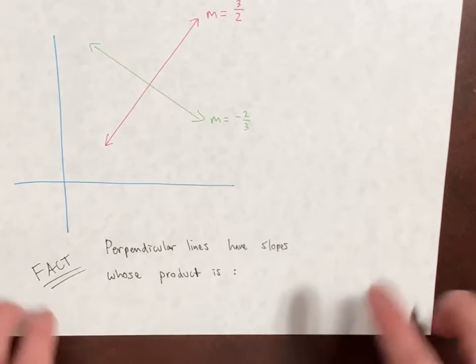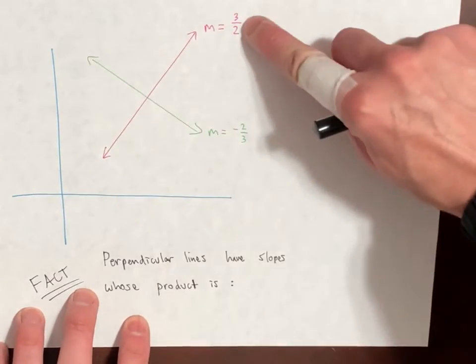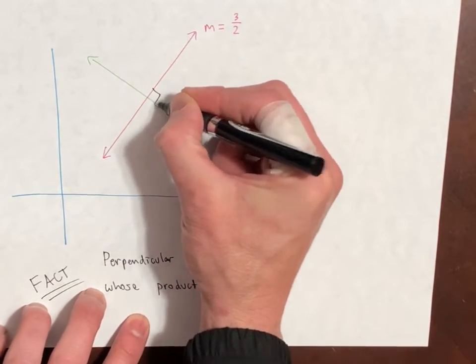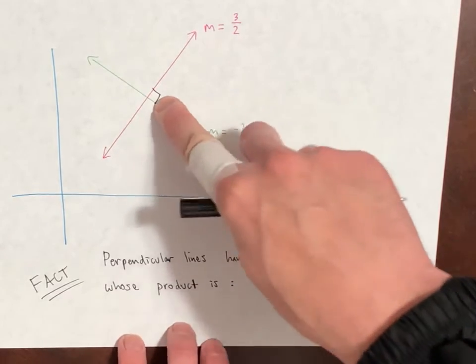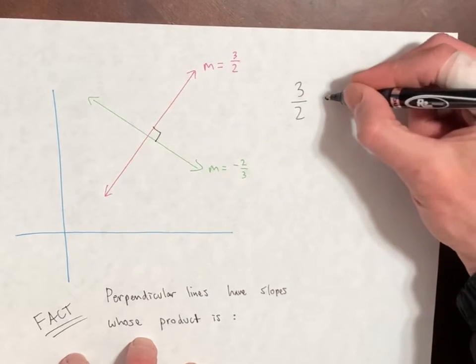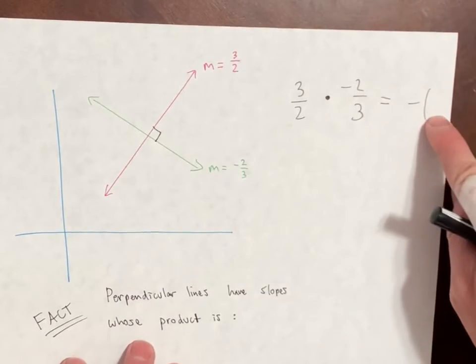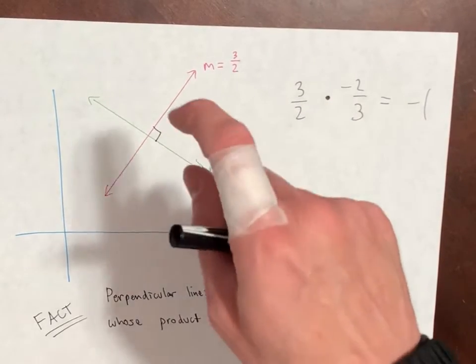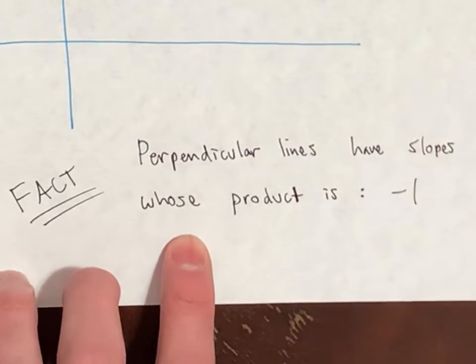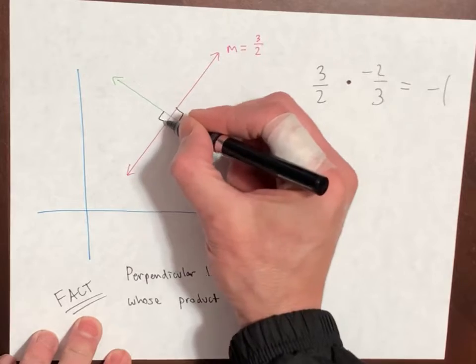Here's a quick fact from Algebra 1. Perpendicular lines have slopes whose product is... This pink one has a slope 3 over 2. This green one has a slope negative 2 thirds. I can tell you these are perpendicular because if I take this slope, 3 over 2, and multiply it with this slope, negative 2 over 3, when I multiply the slopes I get negative 1. Anytime you multiply two slopes and it's negative 1, that means those slopes belong to lines that are perpendicular.